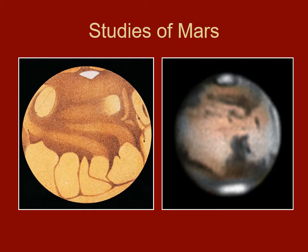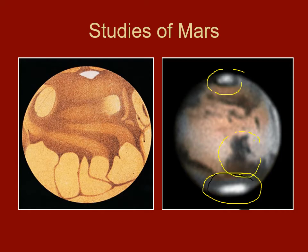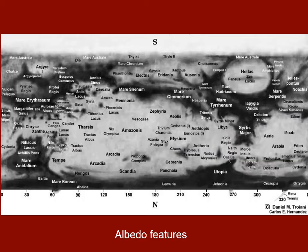So what is Mars really like? On the left are some early albedo maps — albedo being the bright and dark regions — showing features of Mars. On the right is a photograph of Mars where you can see ice caps, a large dark region called Syrtis Major, and other lighter and darker regions. This is our basic view of Mars: it has bright and dark splotches on it.